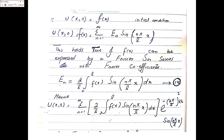The final solution is u(x,t) = Σ(n=1 to ∞) [ (2/l)·∫₀ˡ f(x)·sin(nπx/l)·dx ]·e^(−(nπ/l)²·k·t)·sin(nπx/l). This is the complete solution to the heat equation boundary value problem using the method of separation of variables.